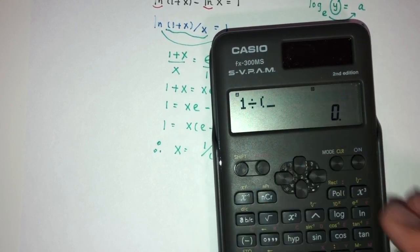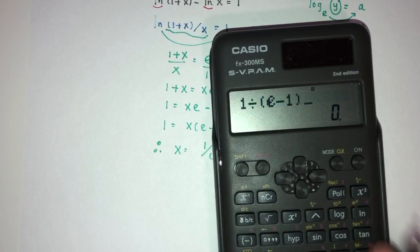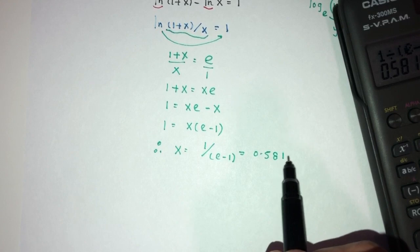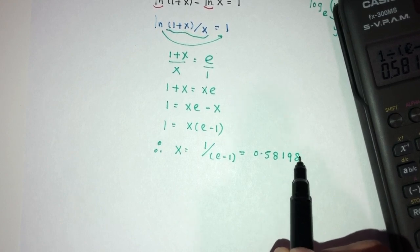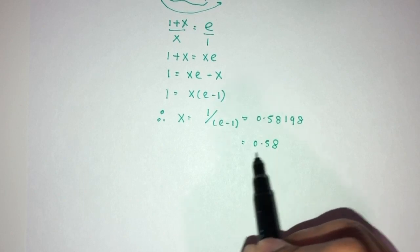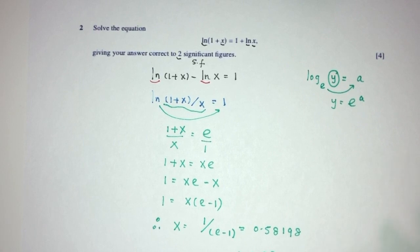So let's find this, exponential minus 1. That will be 0.58198. But correct to 2 significant figures, that will be 0.58. And this is your answer for question number 2. Here we just have to know the laws of logarithms to solve that.